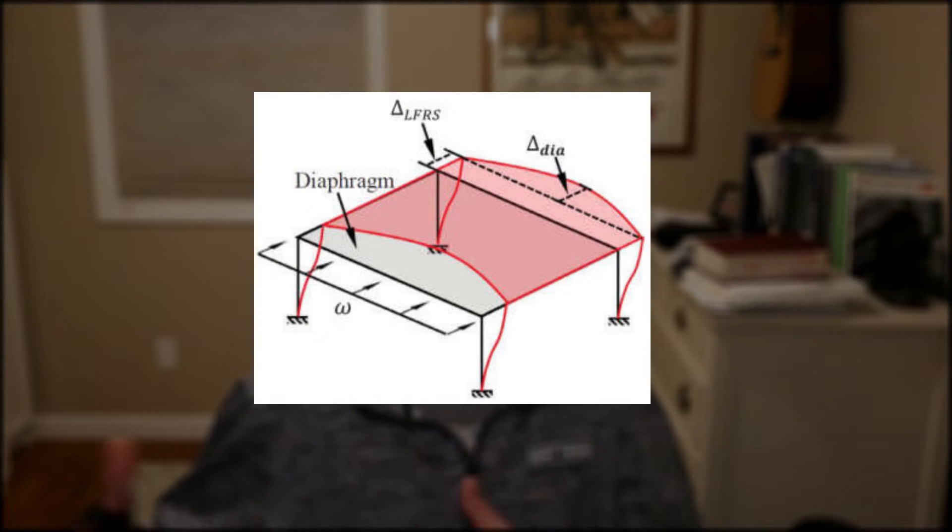And then from there, once you have a flexible diaphragm determined, you can run calculations and assume that your diaphragm is like a simply supported beam between shear walls. And you can run your calculations based on a tributary width between shear walls to determine what load gets transferred to what shear walls.